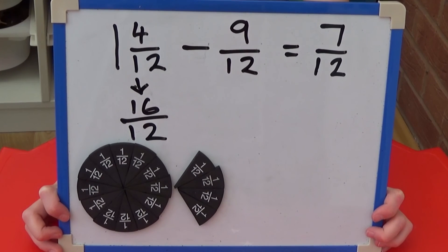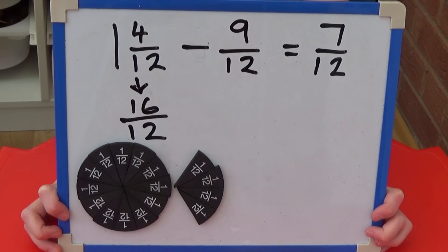One and four twelfths or sixteen twelfths take away nine twelfths equals seven twelfths.